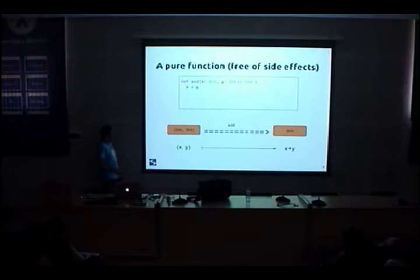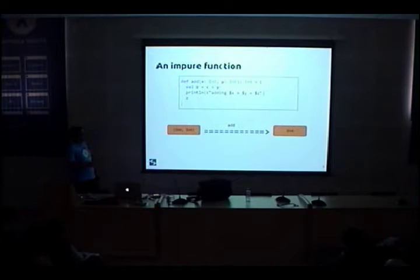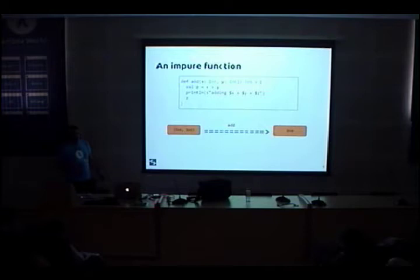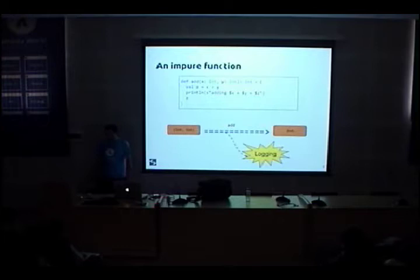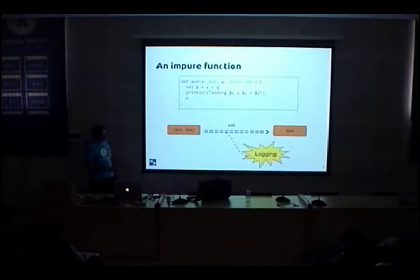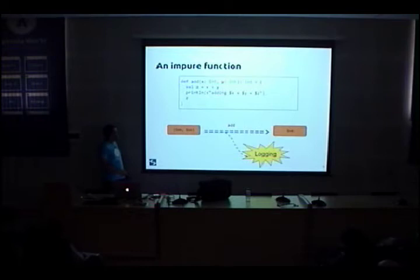Now consider this other function — almost the same as before, but with some logging or printing in the code. Mathematically speaking we are still computing the sum of two integers, but now the signature of the function doesn't reflect what the function actually does. Besides returning an integer, we are also producing side effects. This is like cheating the compiler, because the signature of the function doesn't reflect what the function is actually doing.